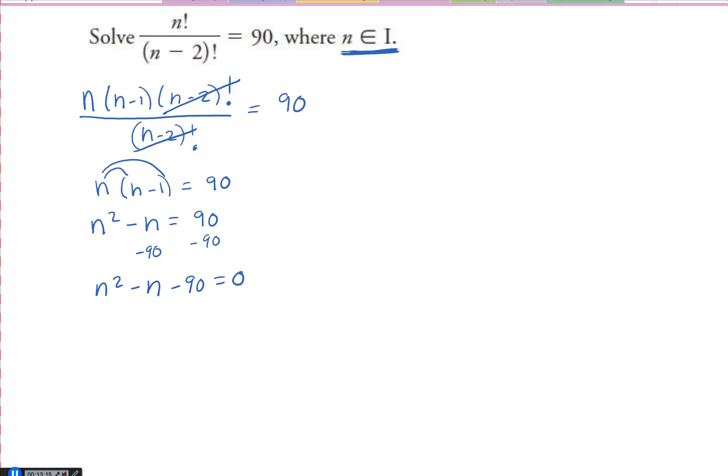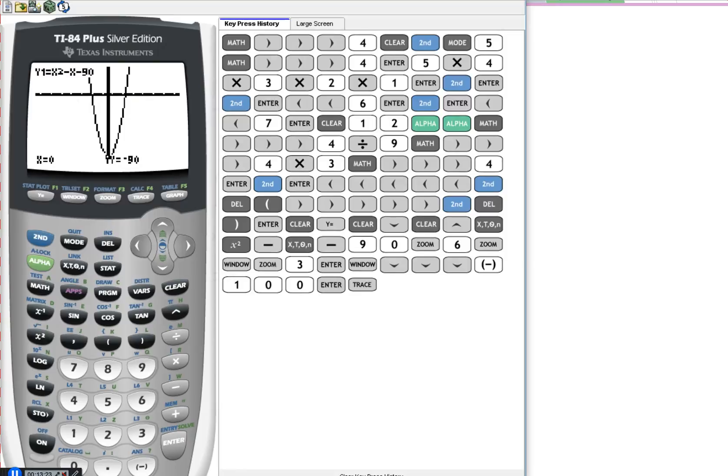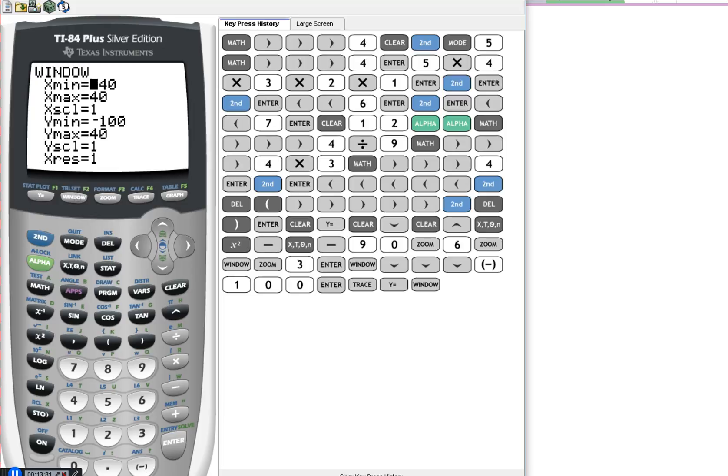So if you're okay with factoring, you can go ahead and do that. But if you're used to putting it into your calculator, then go ahead and do that part. I've done that already. And I've put in y equals. So I've got, instead of n, I put x. So x squared minus x minus 90. And then you need to adjust your window so that this will fit. Because when you hit trace, you're not going to see it right away. Or zoom six, you're not going to see it right away.